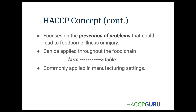HACCP focuses on the prevention of problems that could lead to foodborne illness or injury. Nine times out of ten, a physical hazard leads to injury, while chemical or biological hazards lead to illness. HACCP can — and should — be applied throughout the entire food chain. If you don't catch it at the farm, you're going to have a big issue at the table. It's mandated and imperative that all manufacturing settings have some form of HACCP.